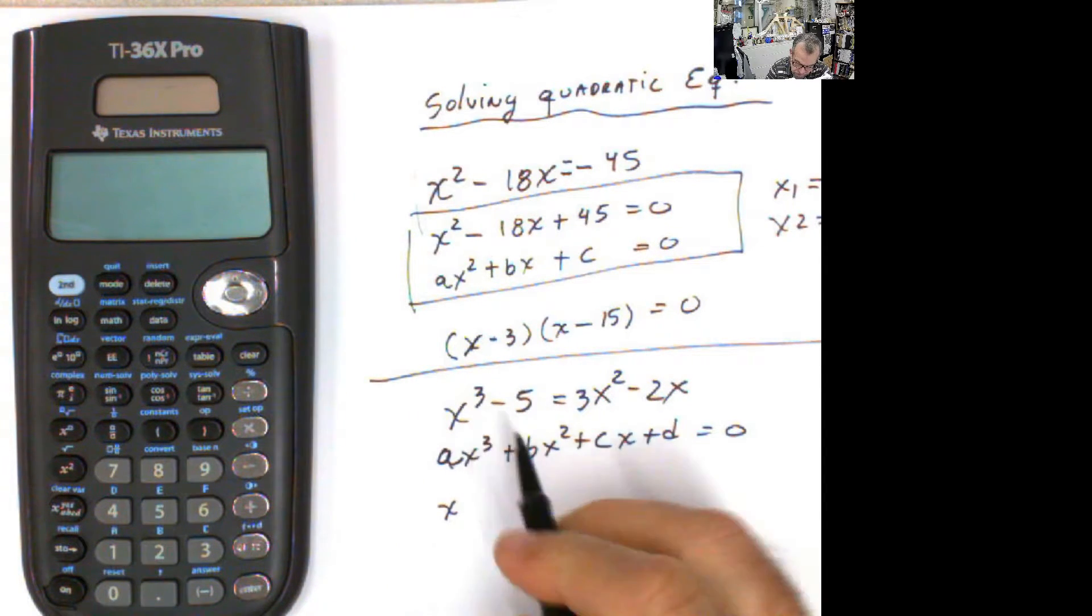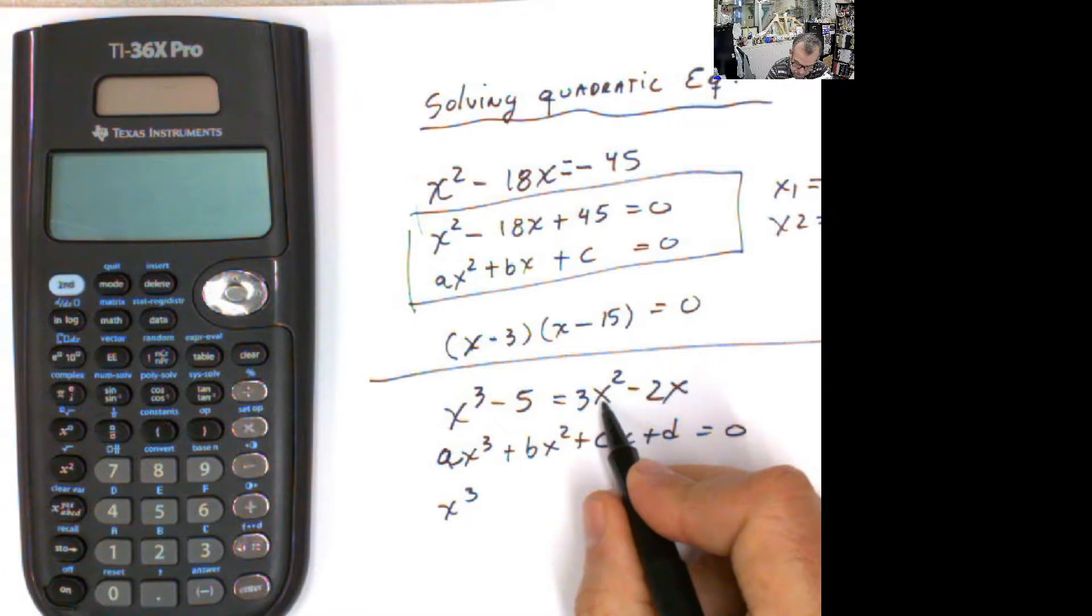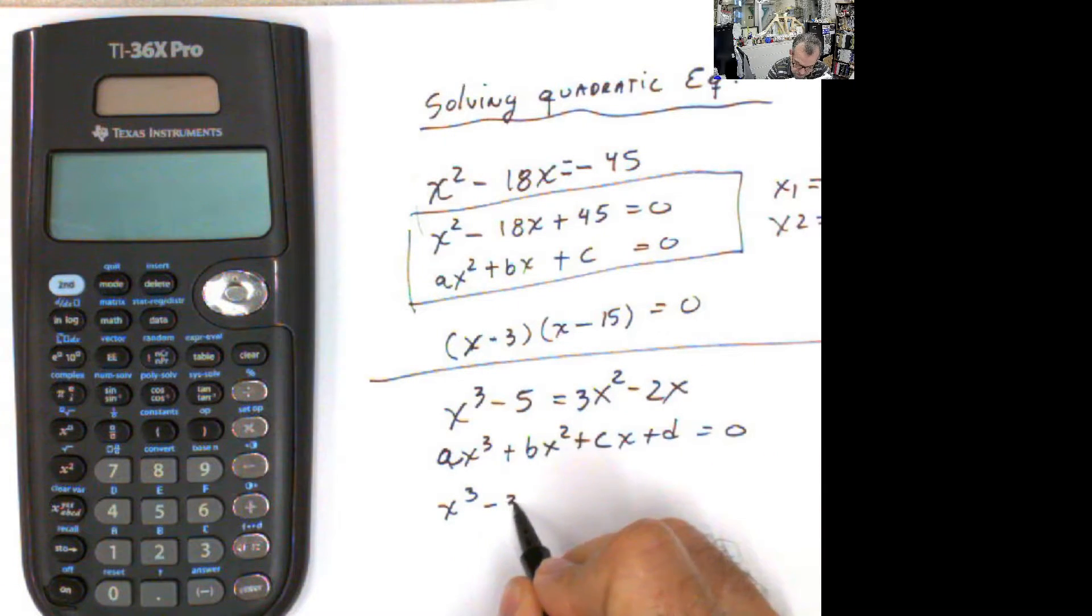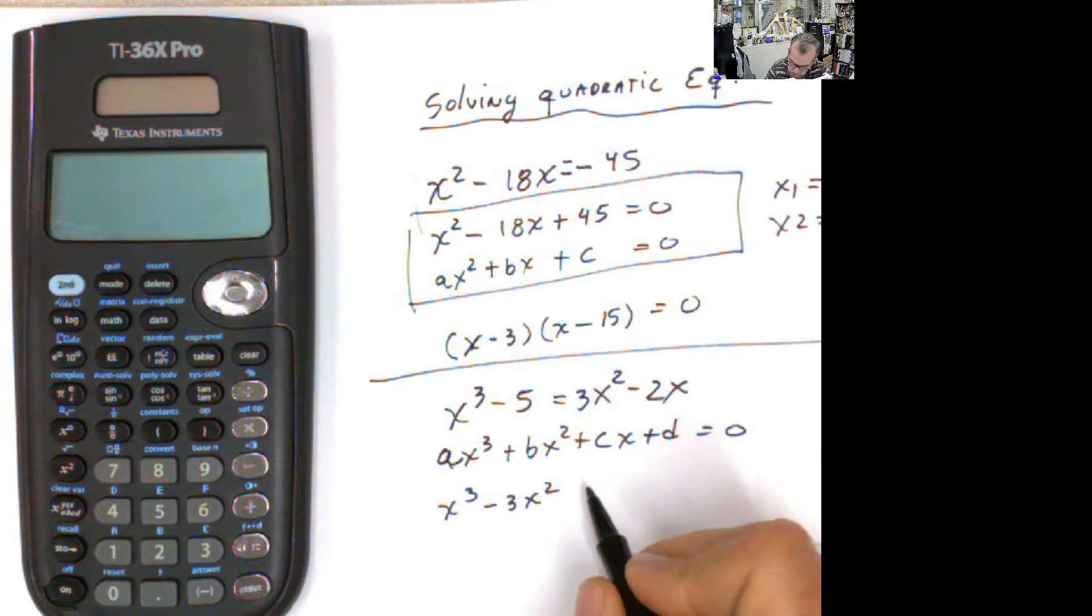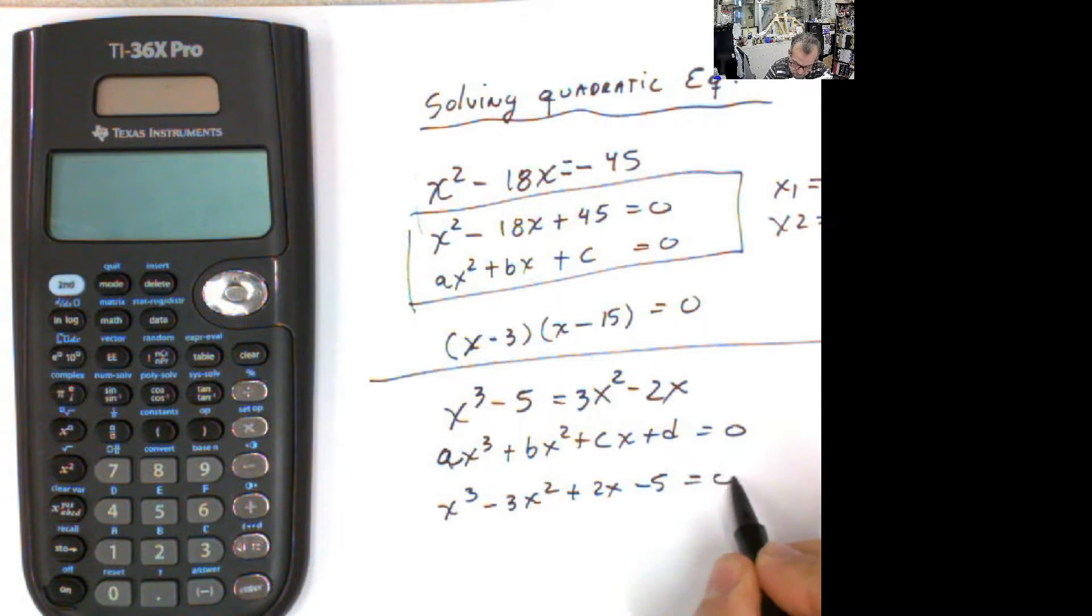This is 8, by the way. It's not 9. So x to the third, and then this is positive. I'm going to pass it negative to the other side. x squared, this is negative. I'm going to pass it positive to the other side, 2x minus 5 equals 0.